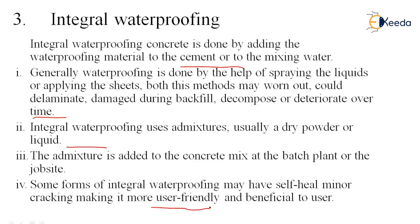Some forms of integral waterproofing have minor crack healing properties, making it more user-friendly and beneficial. You don't have to purchase a sheet, bring it to the site, heat it, melt adhesive, paste it, and do overlapping — as with bituminous membranes. Nor do you need to bring liquid membrane, purchase it, ensure safety, spray it, and do maintenance. With integral waterproofing, you simply add it like an admixture at the batch plant, mix it in the concrete, and it is ready to use.